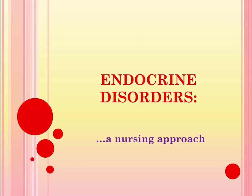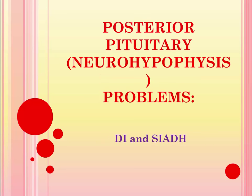This brief recording will be examining the common endocrine disorders that involve the posterior pituitary gland. The posterior pituitary gland, also known as the neurohypophysis, produces anti-diuretic hormone, or ADH. Diabetes insipidus and the syndrome of inappropriate ADH are two complications that can occur if there is not enough or too much of this anti-diuretic hormone produced.